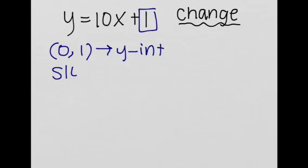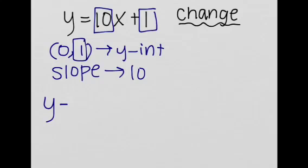We also already know the slope. Our slope is 10. Great. Now we have everything we need to do. So y minus y1, which is 1,